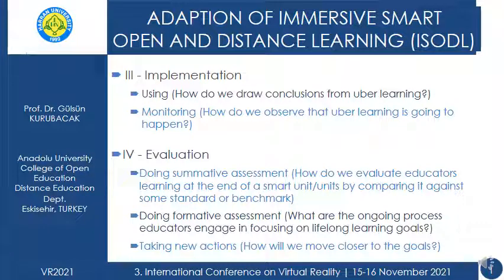Then switch to the third stage: using and monitoring. How do we draw conclusions from Uber learning? We apply it and get results. How can I understand what the conclusions are? You have to monitor and always collect data. Then evaluation — a very important stage. We must do summative assessment, formative assessment, and then take actions. We have to discuss smart units and comparison against some standard or benchmark — we have to define that. And what is the ongoing process educators engage in focusing on lifelong learning goals in this Uber learning environment? How will we move closer to goals? Can we? Or what are the problems? You have to answer all of these.